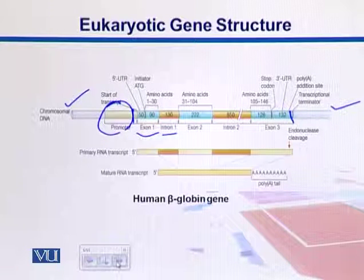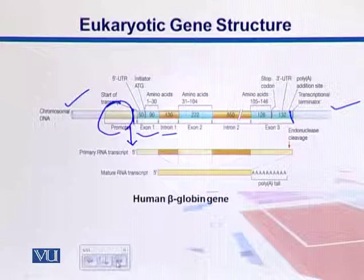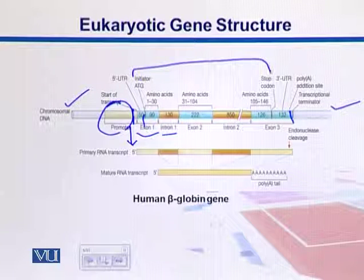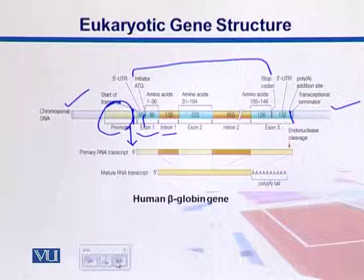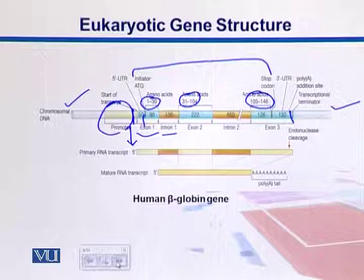Towards the 5 prime end we have a 5 prime UTR — UTR stands for untranslated region. This region is transcribed into messenger RNA but no protein comes from it, so that region stays as untranslated. The same way, towards the 3 prime end, we also have a 3 prime UTR. The ORF is the region between a start codon (or initiator) and the stop codon, and in between them we can see different numbers of amino acids. These are the regions from which translation takes place and we get a protein. After transcription, the transcript is called the primary transcript.